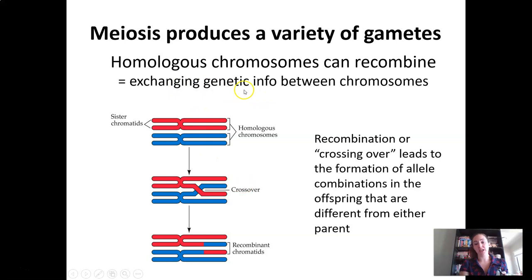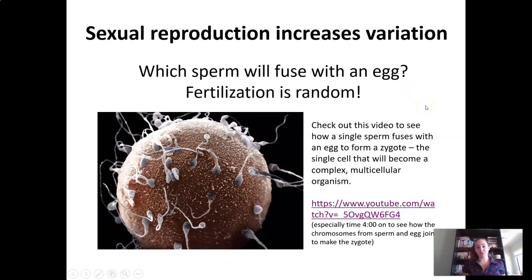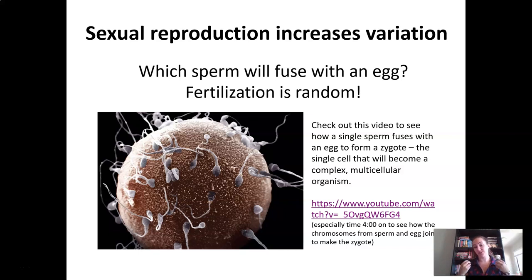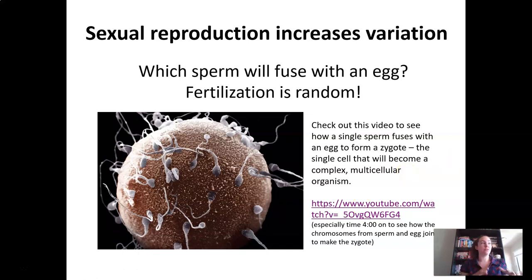Recombination is when homologous chromosomes exchange genetic information. So after going through independent assortment and chromosomal crossing over, we have a really broad variety of different gametes produced — each one has a unique set of DNA even though they're coming from the same individual. On top of that, when two individuals reproduce, it is completely random which sperm will fuse with which egg, so the process of fertilization is also random. This image shows sperm trying to fuse with an egg, and there's a video linked here that goes into great detail about the journey of a sperm cell and how it fertilizes an egg. Note: the video at the end says something about genes determining the baby's gender — gender is not a biologically genetic trait, so ignore that part, but otherwise it's a great video.